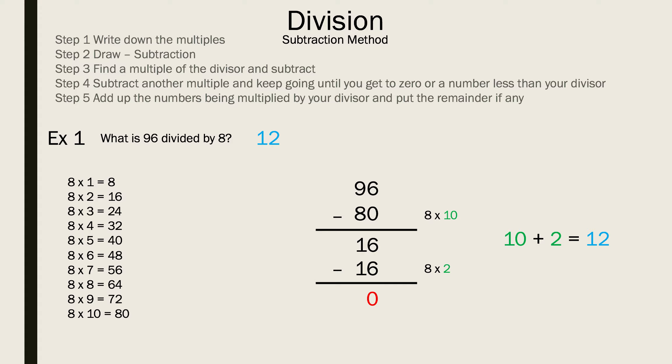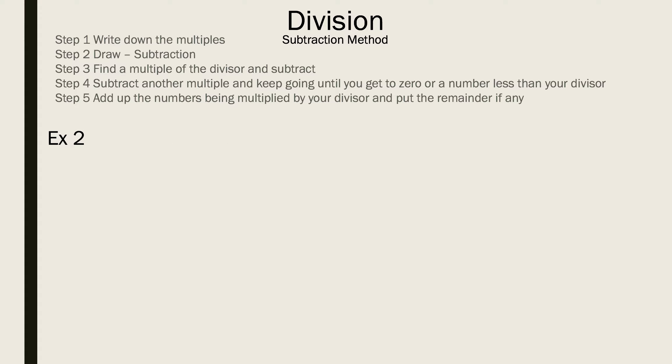Take a look at example number 2 now. What is 90 divided by 6? Once again, write your multiples of your divisor, which is 6 in this case. Now we're going to draw the subtraction lines. Now we're going to pick any number. I think you should pick a multiple of 10, which is easier to deal with. Then you do minus 60 because we know 6 times 10 is 60, which gives me 30.